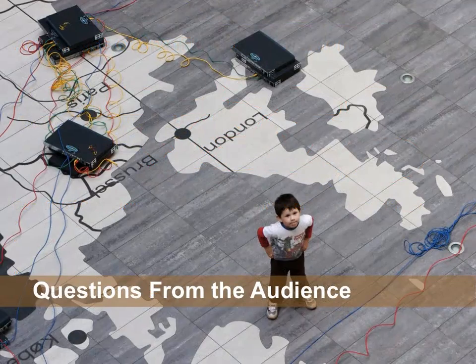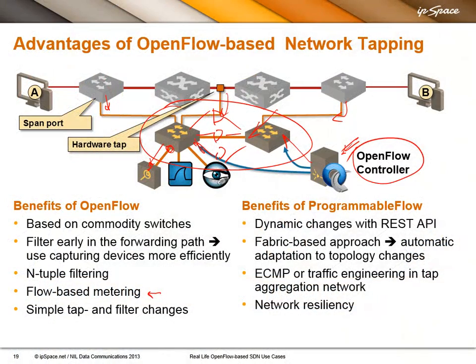Question: how does replacing traditional switches with OpenFlow-enabled switches help in lowering the number of switches required? OpenFlow itself will never reduce the number of switches you need. OpenFlow cannot change the laws of physics. If you need 10 ports, you need 10 ports. If you need 100 ports, you need 100 ports. What OpenFlow can do in this particular use case is limit the information that's collected so that you don't need as many capturing devices, or don't need high-speed capturing devices. As for reducing the number of switches, that's not how I would position OpenFlow — it can do numerous other things, but it cannot reduce the number of ports you need.